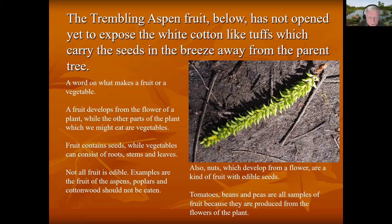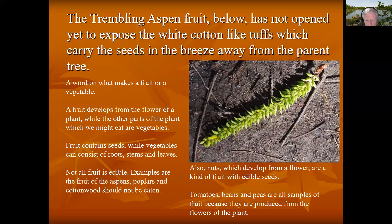A word on what a fruit is. Most people believe that a fruit is something you eat, but a fruit develops from the flower of a plant, while the other parts of the plant which we might eat are vegetables. Fruit contains seeds, while vegetables can consist of roots, stems, and leaves. Not all fruit is edible — examples are the fruit of the aspens, poplars, and cottonwoods; they should not be eaten. Also, nuts which develop from a flower are a kind of fruit which is edible. Tomatoes, beans, and peas are all samples of fruit because they are produced from the flowers of a plant.